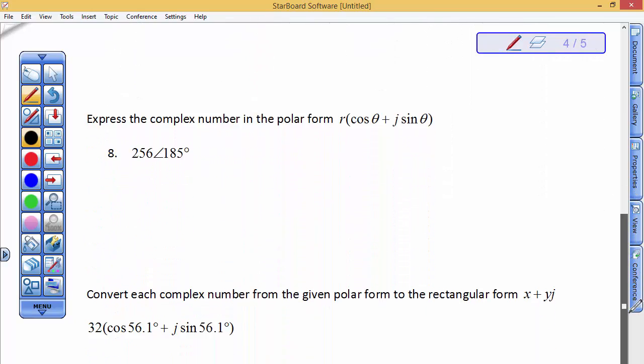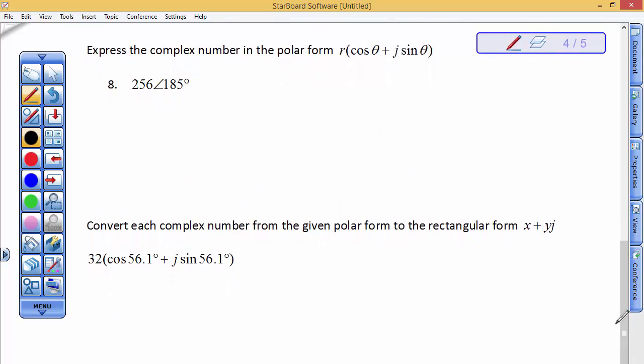So I now want to express a complex number. Oh, I'm sorry. Actually, this one just says, you know, write this in its full-fledged form. So just write this as 256 times the cosine of 185 degrees plus j times the sine of 185 degrees. So there it is, and it's, if you will, full-fledged form.